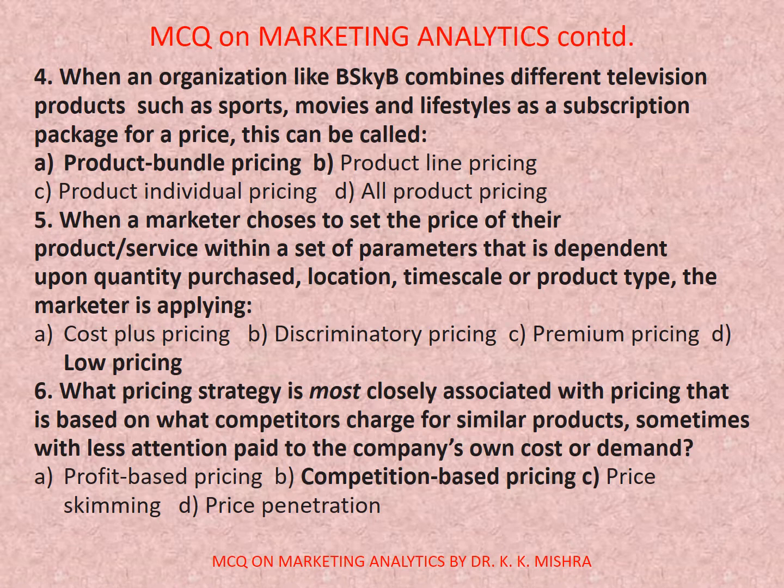Question number five: When a marketer chooses to set the price of their product or service within a set of parameters dependent upon quantity purchased, location, time scale, or product type, the marketer is applying? Options are: a) cost plus pricing, b) discriminatory pricing, c) premium pricing, d) low pricing. Correct option is b) discriminatory pricing.